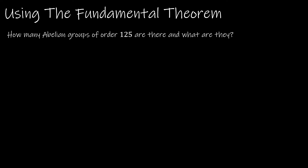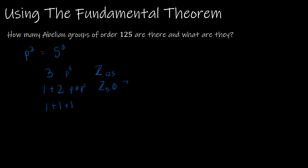Let's do a little bit of practice. How many abelian groups of order 125 are there, and what are they? What you're doing is thinking about how to factor 125: it's five cubed. So we just talked about P cubed — this is just five cubed. How many ways can I partition three? I could partition it into three, or one plus two, or one plus one plus one. So there are three groups. They are Z of 125, Z five cross Z 25, and Z five cross Z five cross Z five.